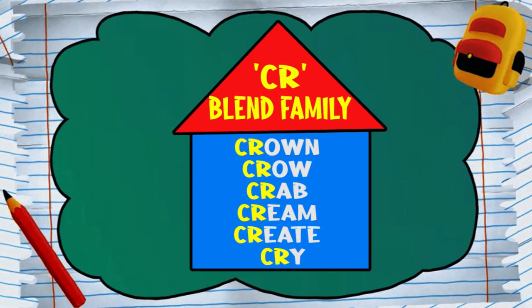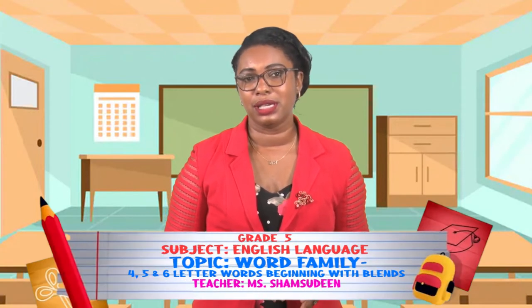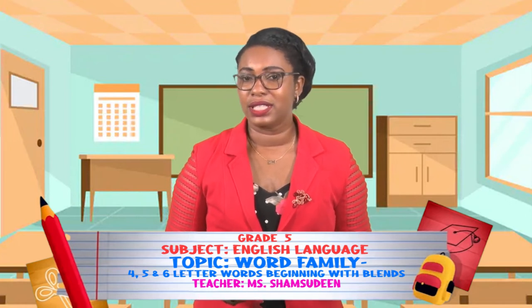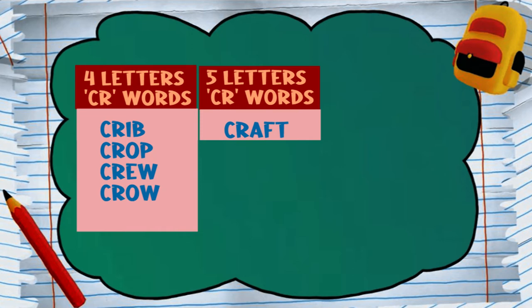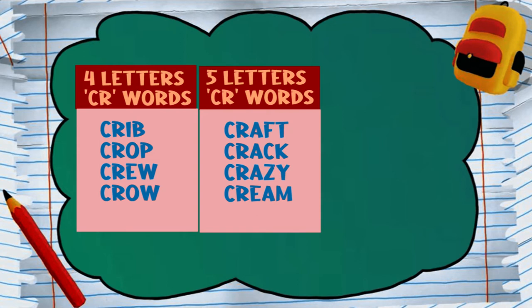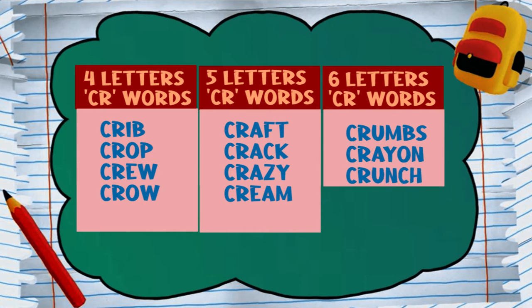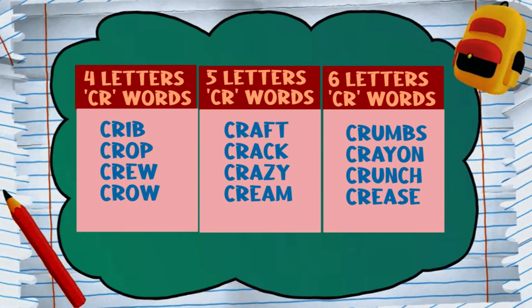You will notice that the words do not have the same amount of letters — some have four, some have five, and some are spelled with six letters. For the four-letter words, we have crib, crop, crew, and crow. For five letters, we have craft, crack, crazy, and cream. For six letters, we have crumbs, crayons, crunch, and crease. When you say these words, listen to ensure that they do belong to the CR blend family. You will now add at least three more words to this blend family.